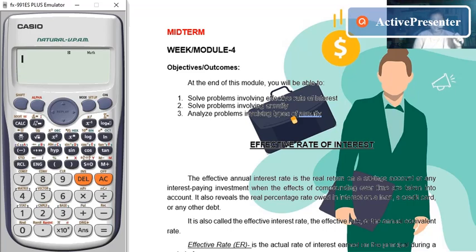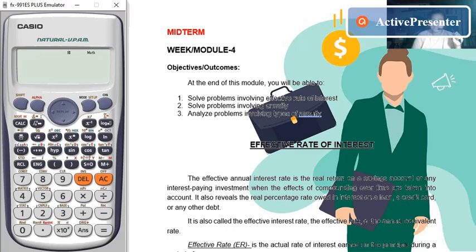First, let's tackle our first topic, which is the effective rate of interest. The effective annual interest rate is the real return on a savings account or any interest-paying investment when the effects of compounding over time are taken into account. It also reveals the real percentage rate owed in interest on a loan, a credit card, or any other debt. It is also called the effective interest rate, the effective rate, or the annual equivalent rate.